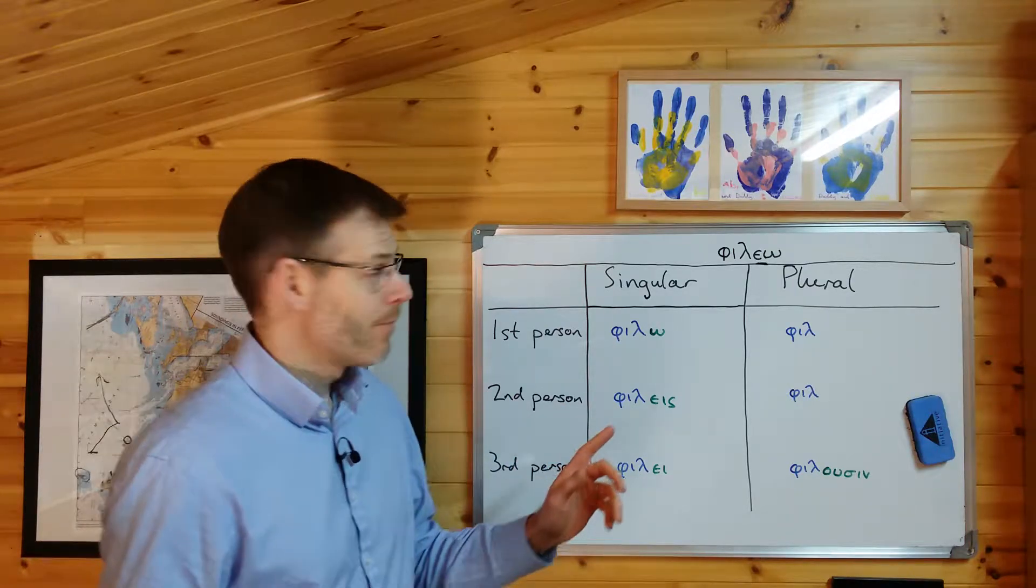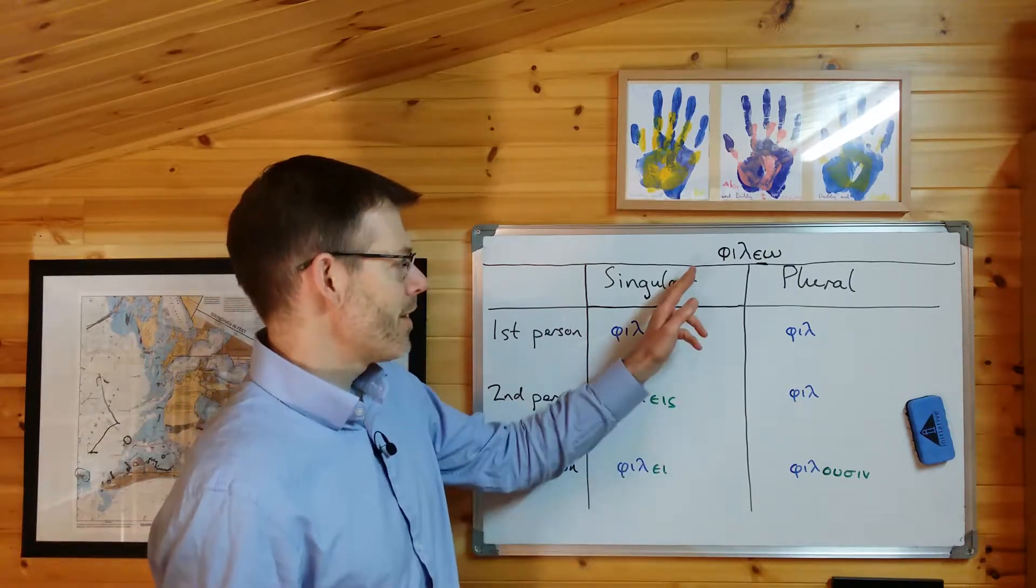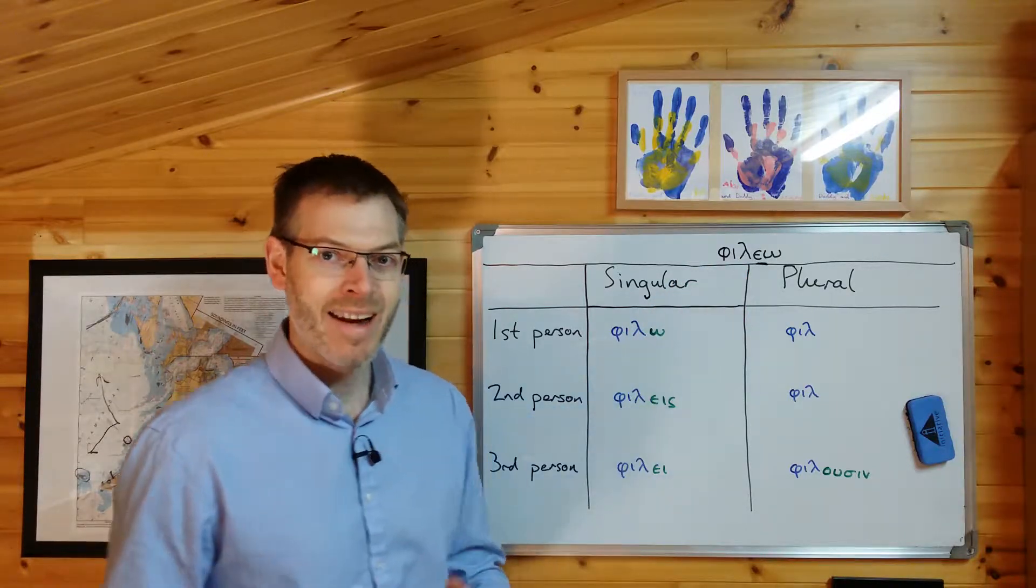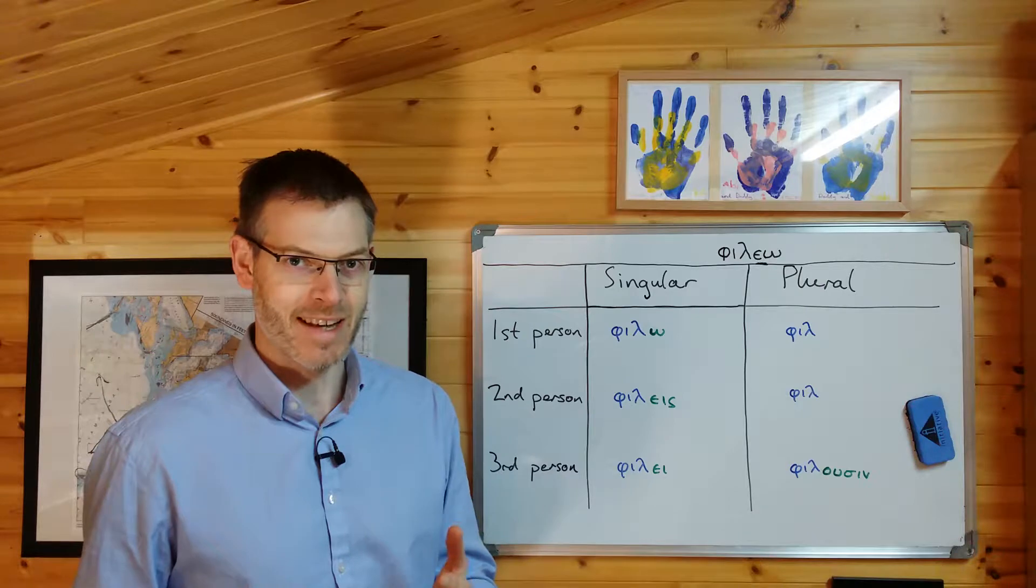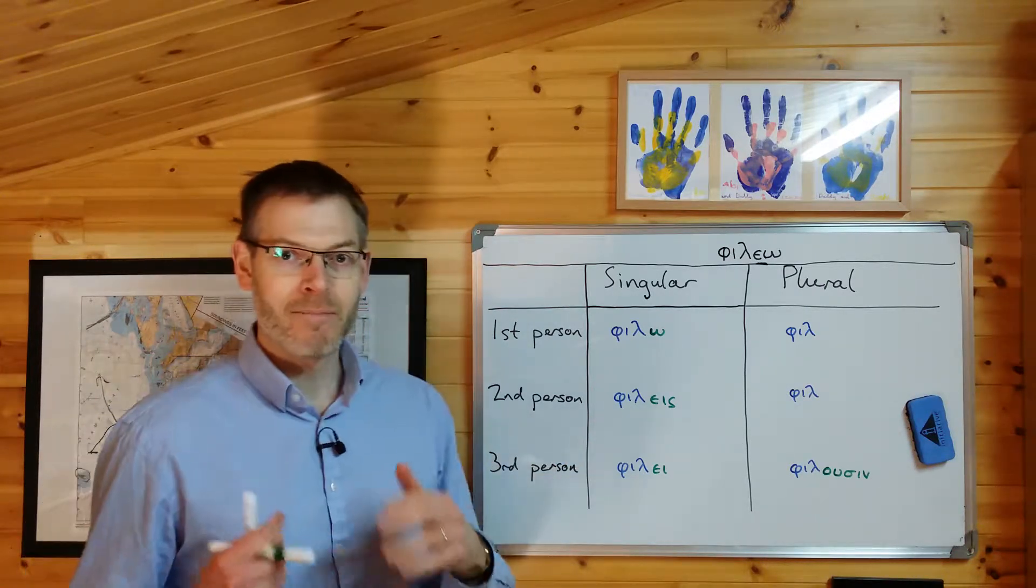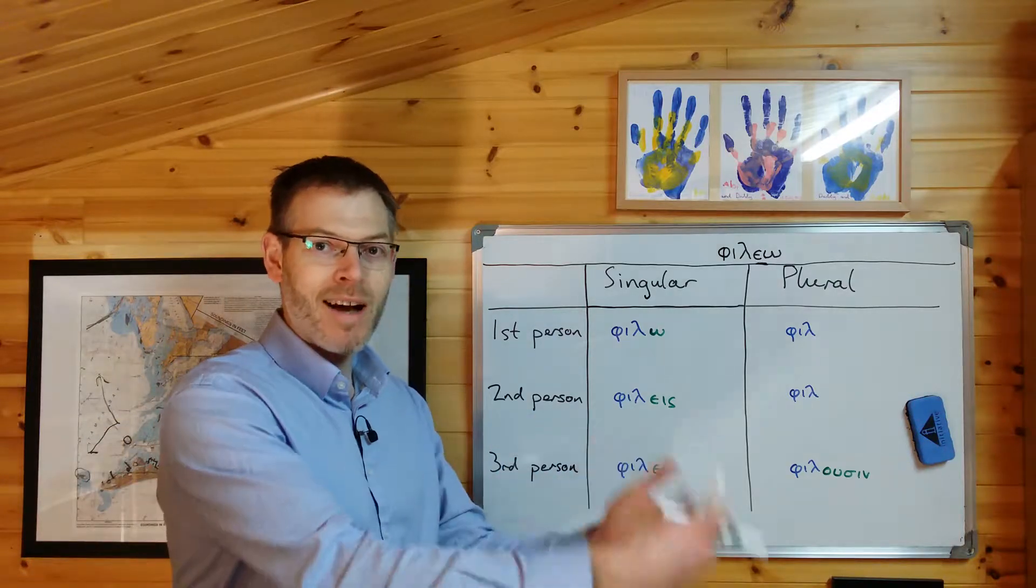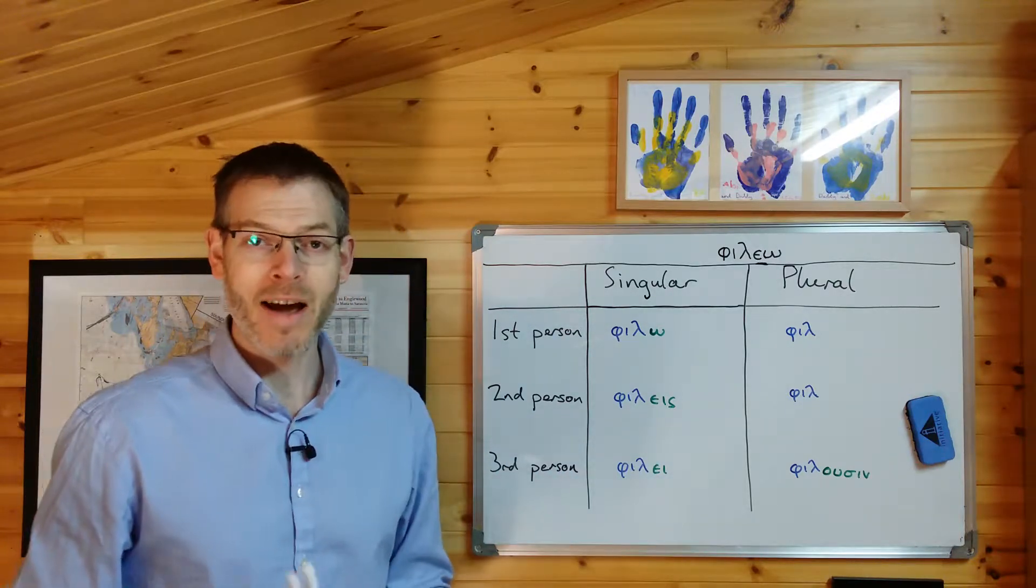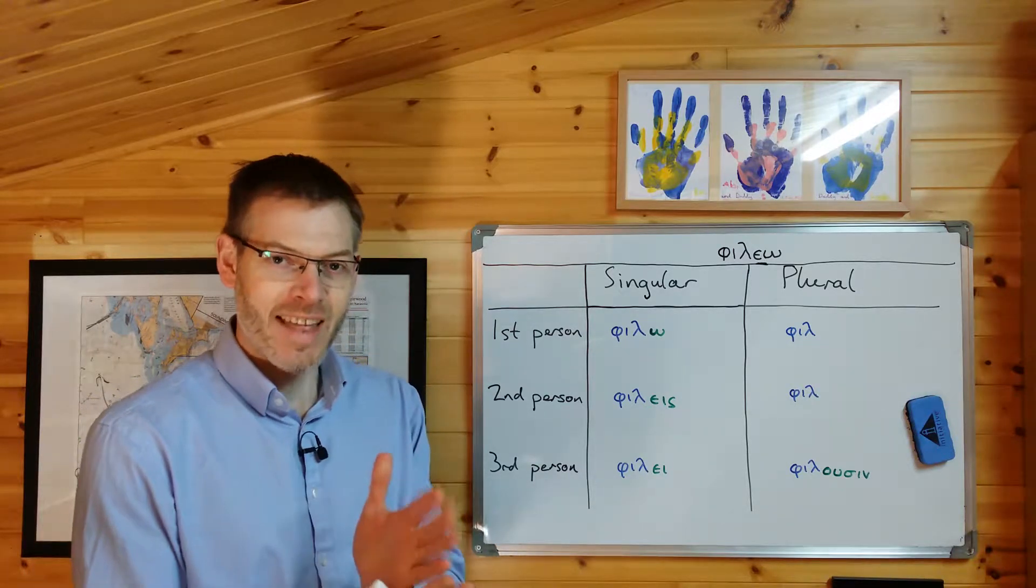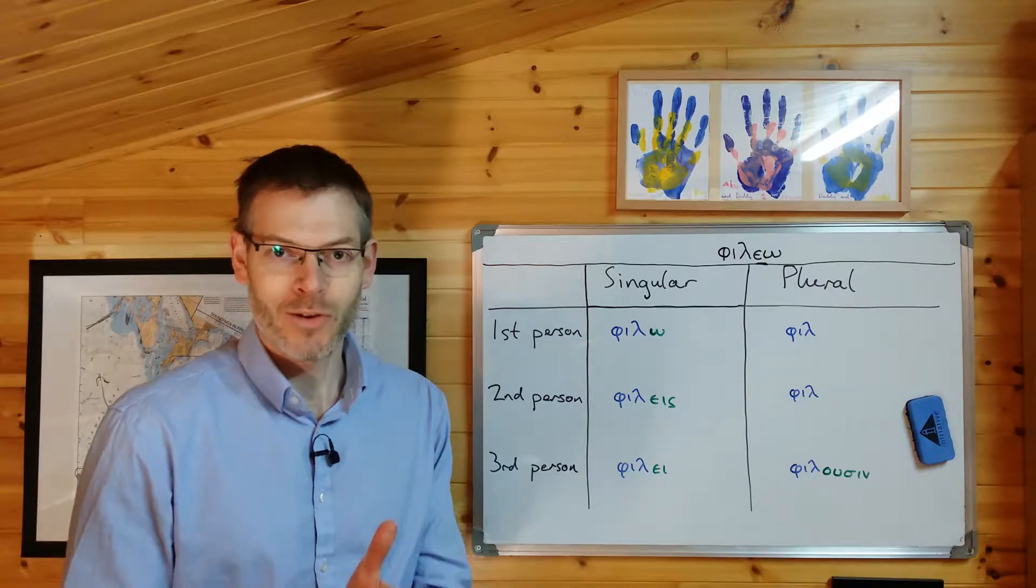With φιλέω, the stem of the word ends with an epsilon. And epsilon is quite a weak letter in Greek. So what it tends to do then, in this case, is combine with whatever comes after it and form either a long vowel or a diphthong. It doesn't like to just sit there on its own as a short vowel.